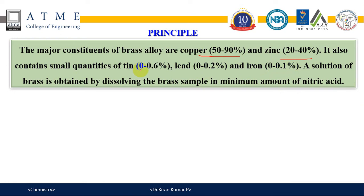Zinc comes next, and other trace amounts of tin, lead, etc. The principle behind the titration is that the brass sample is dissolved using nitric acid to form a brass solution which contains copper. This copper is allowed to react with potassium iodide, which liberates iodine. By measuring the iodine liberated, we measure the amount of copper present in the brass sample.